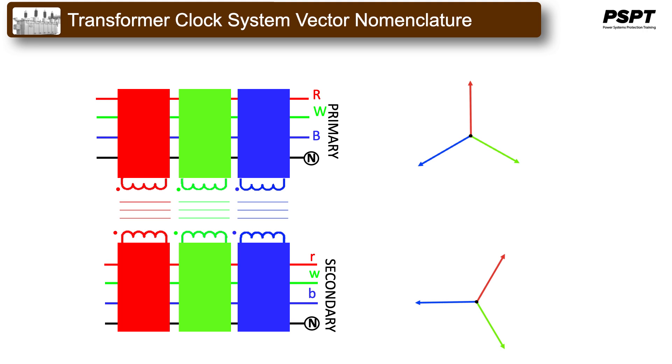But in all systems, it is desired to have both primary and secondary systems rotating in the same direction, and that, as a standard, is usually counterclockwise. This, of course, goes for the phase-to-phase voltages as well, specifically when we are dealing with a delta-delta connection.